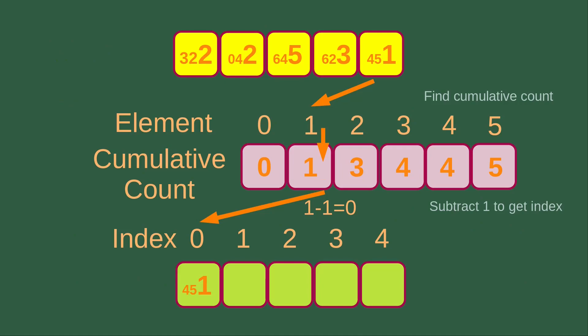The radix sort process starts with the rightmost number to be sorted. In this way, we can be pretty sure that the relative positions of the numbers after sorting will not be altered. So we just try to find out the position of 451. For this value, we simply focus on the units digit, which is 1. For element number 1, the cumulative count is 1, so the index to place it is 0 (subtracting 1 from 1).